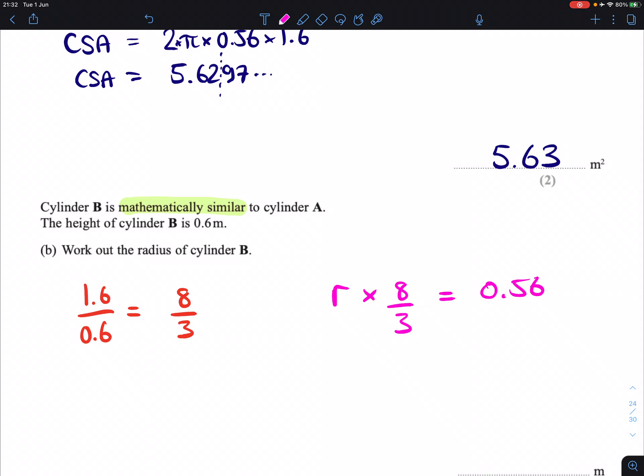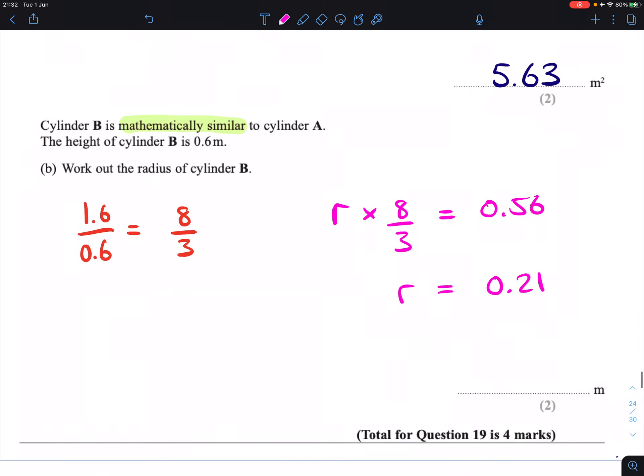Now, if I divide both sides by 8 thirds, which you can do in one go if you'd like, you will end up with 0.21. If you were to try and do this without a calculator, you would do this times 3, first of all, get an answer, and then divide it by 8. But either way, our radius is 0.21 meters. Done.